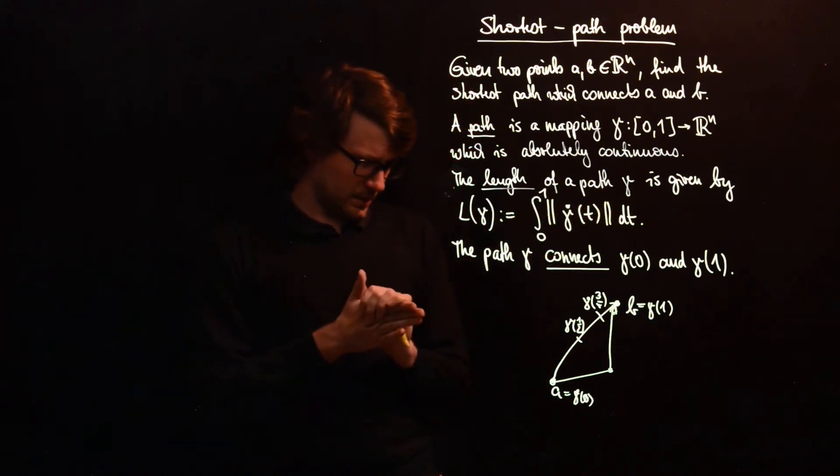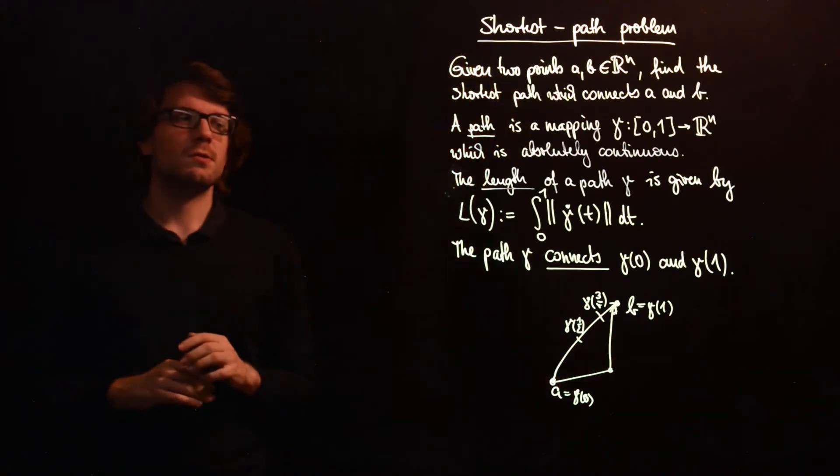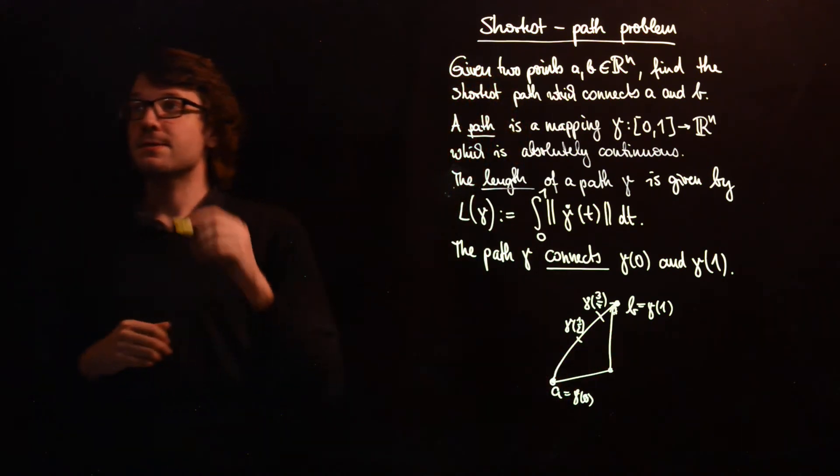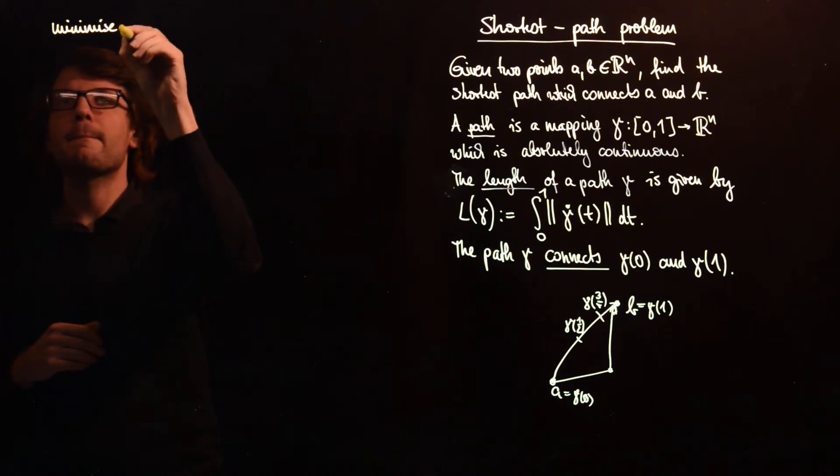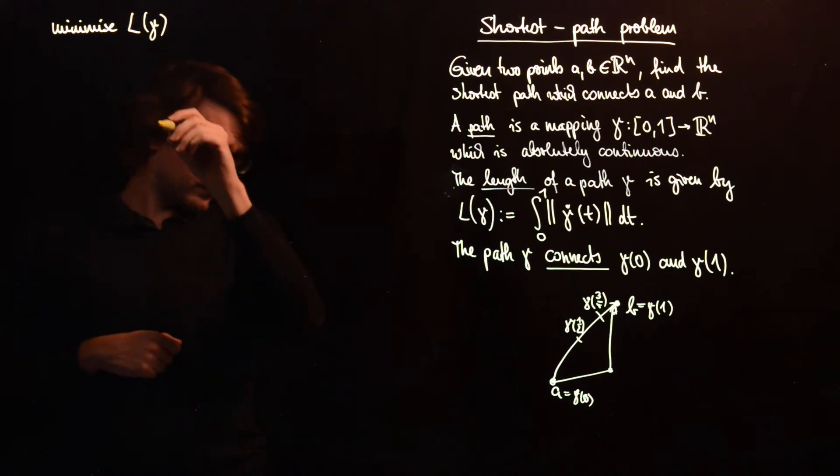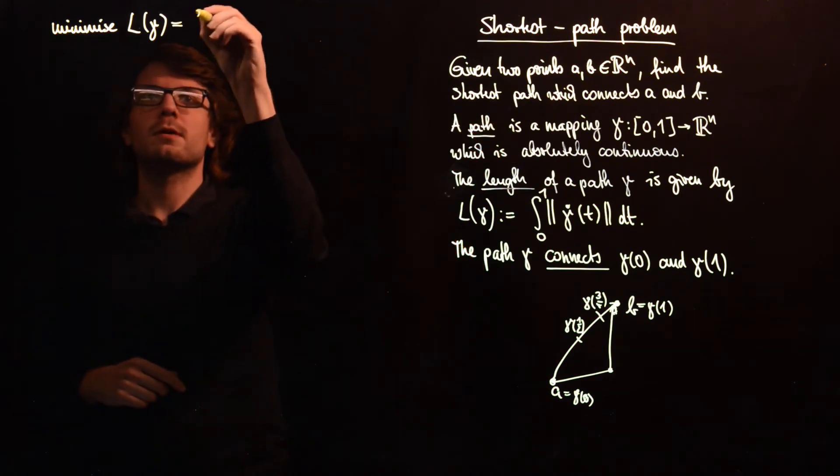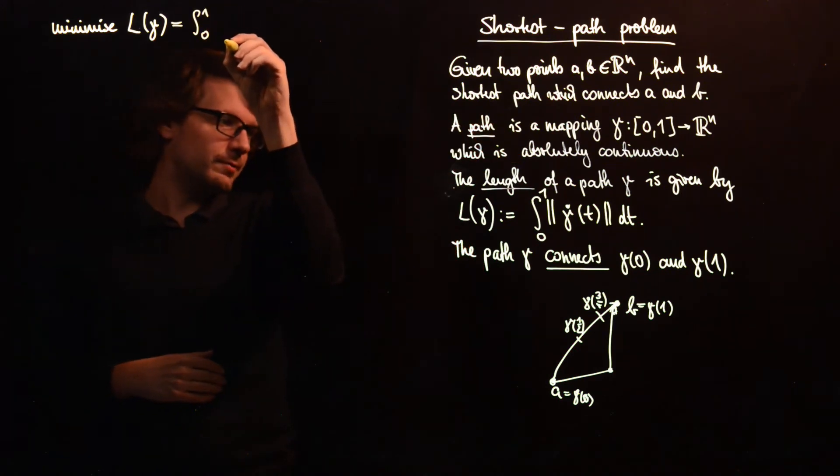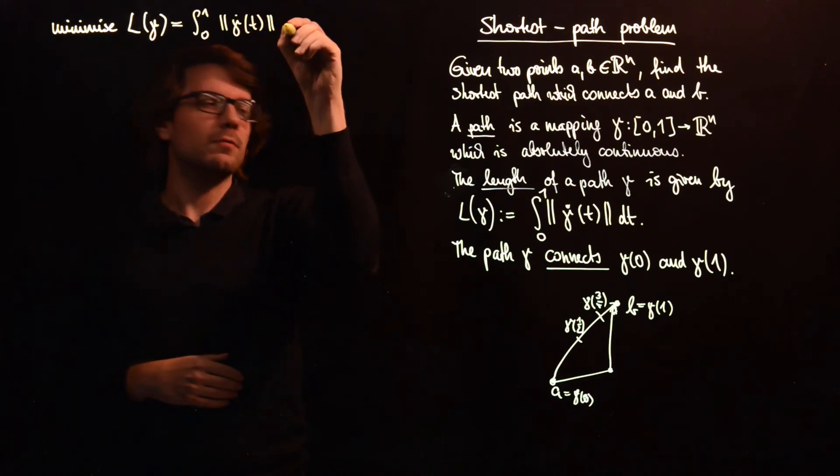So now we have this, so now let's formulate the optimization problem. So we want to minimize the length of gamma, this is, we want to find the shortest path, and we can write this as the integral between, from 0 to 1, of gamma dot norm.